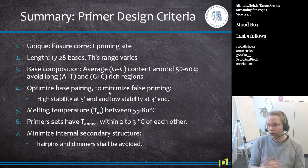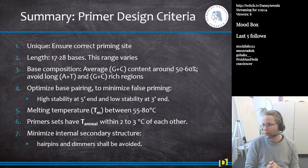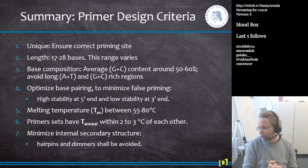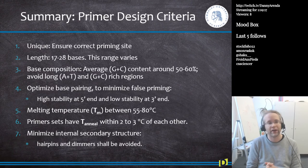Primers work in pairs — forward and reverse. Since they're used in the same PCR reaction, the conditions must be suitable for both. One critical feature is that their annealing temperatures must be compatible: the difference in annealing temperature between the forward and reverse primer should not exceed three degrees Celsius. The closer the annealing temperatures are to each other, the better the PCR works.